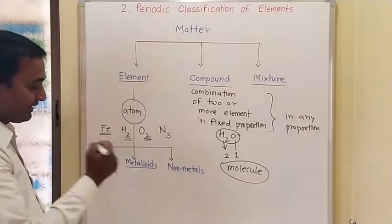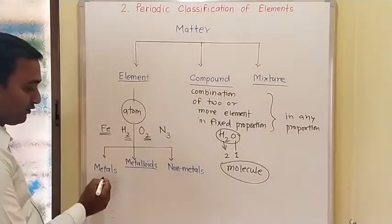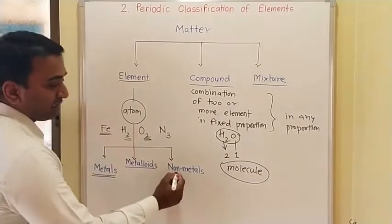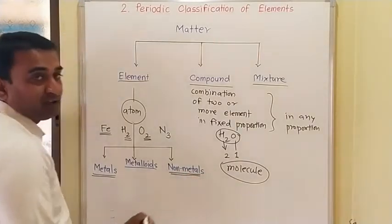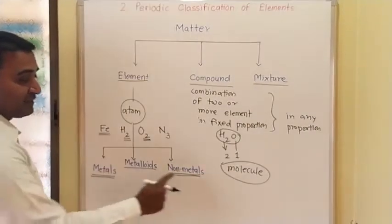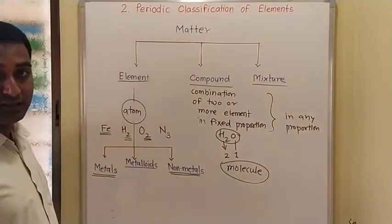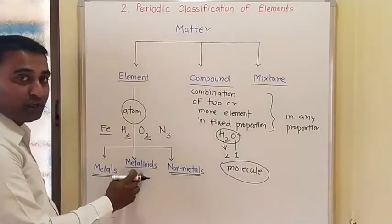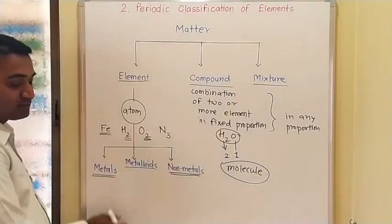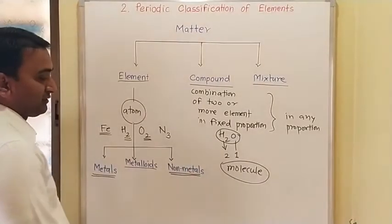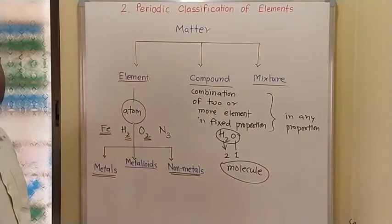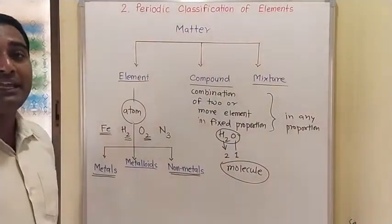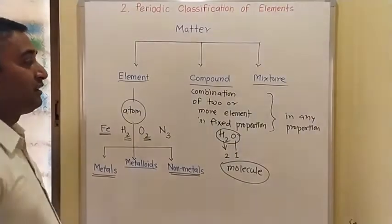Elements are divided into three parts. The first is metal. Those which are not metals are called non-metals. The properties of metals and non-metals are opposite to each other. But some elements in nature show both the properties of metals and non-metals — these are called metalloids.